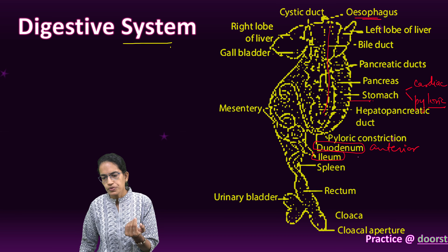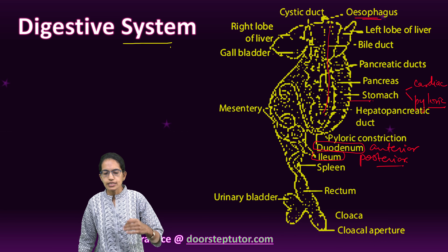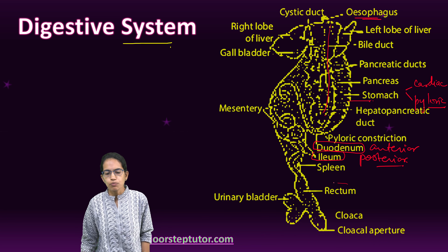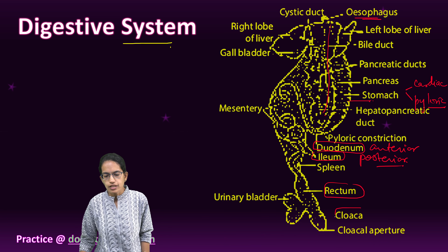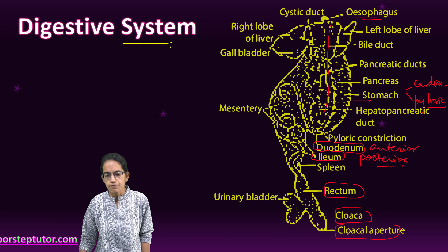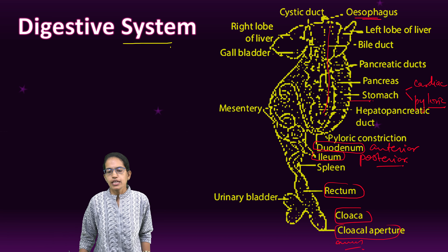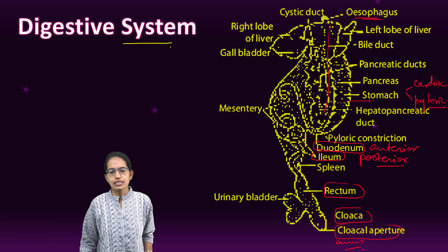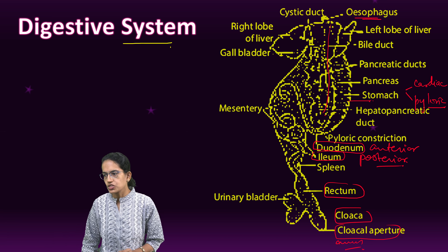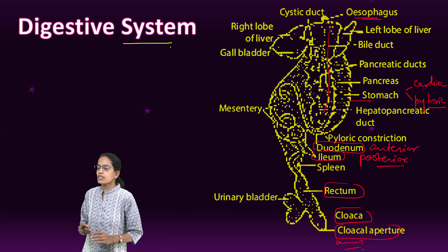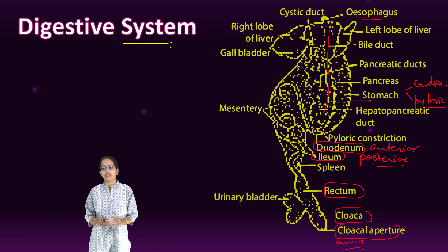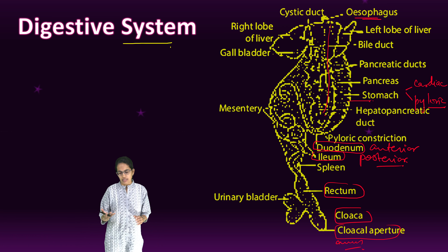The anterior part is the duodenum and the posterior part is the ileum. This ileum leads to the large intestine which opens into the rectum, and finally the cloaca and the cloaca aperture which opens outward.